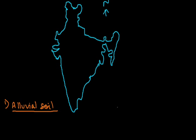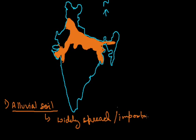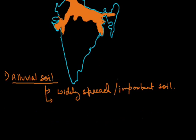First is the alluvial soil. Before that, let me show in which part of India alluvial soil is found. So in this part of India alluvial soil is found. Basically, it is a widely spread soil deposited by Himalayan rivers.